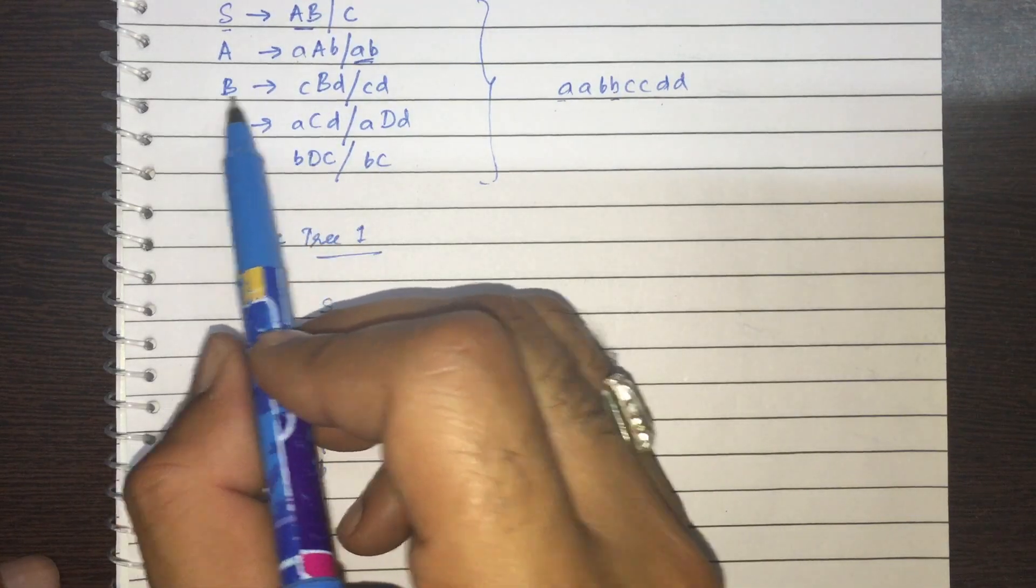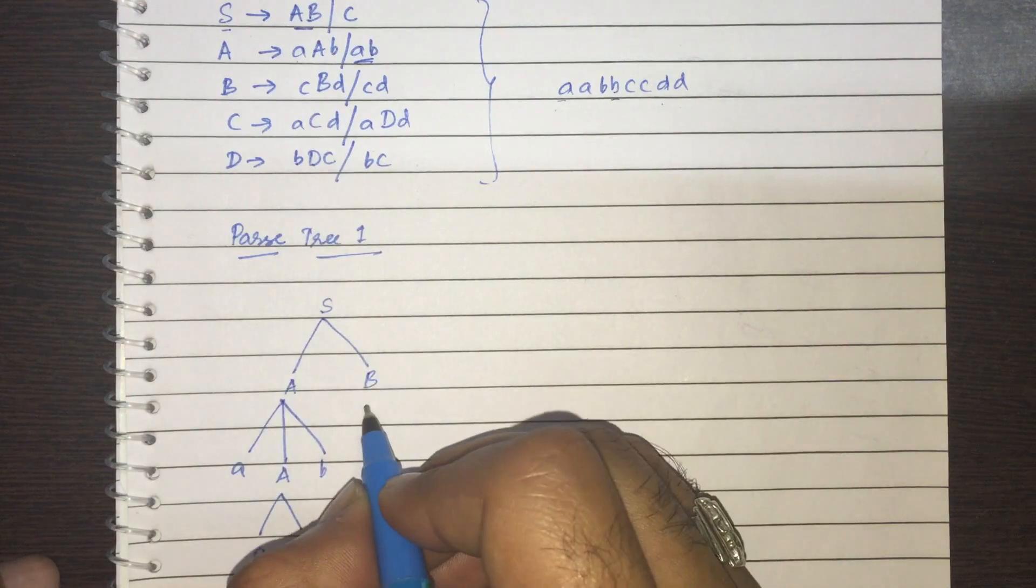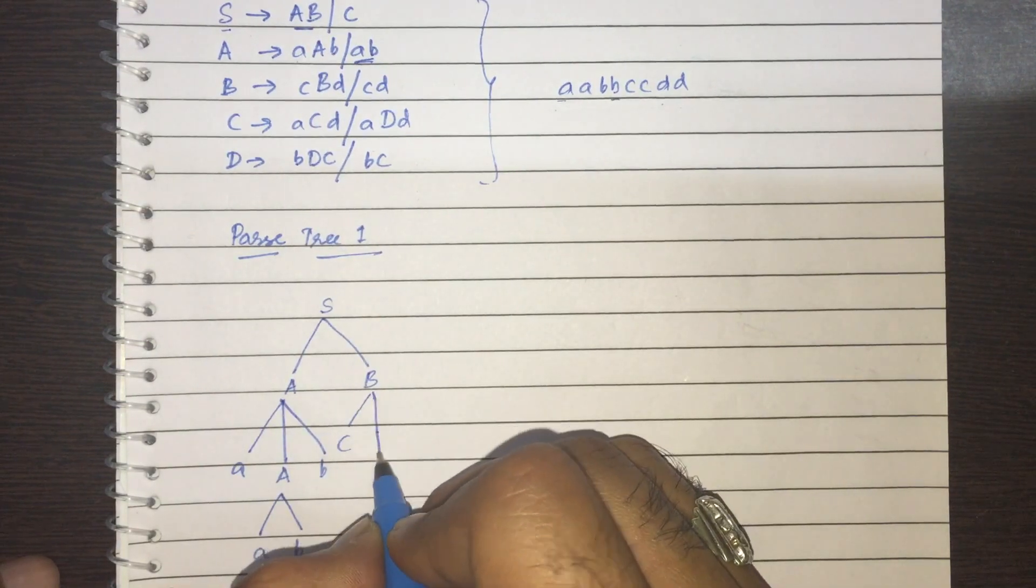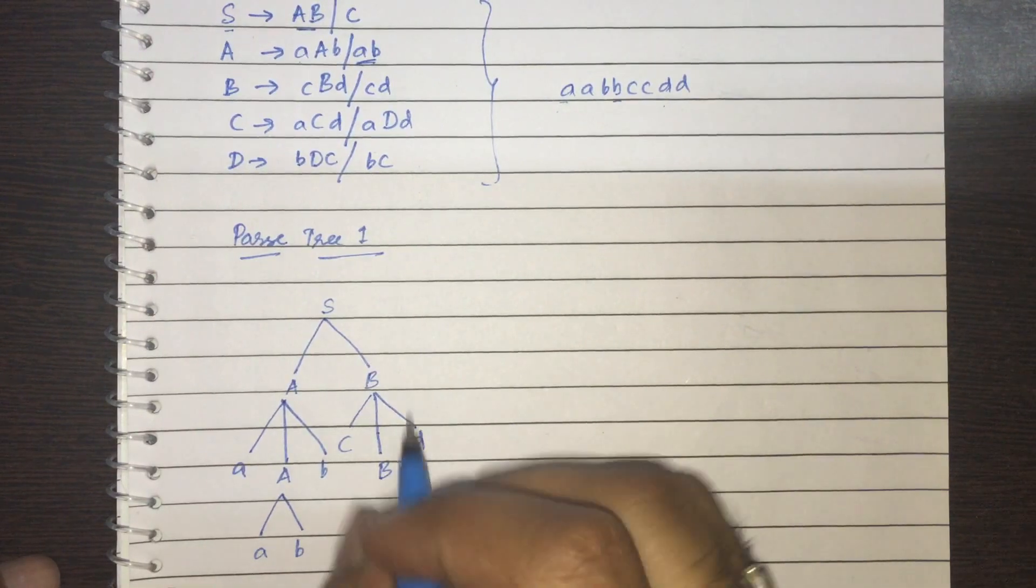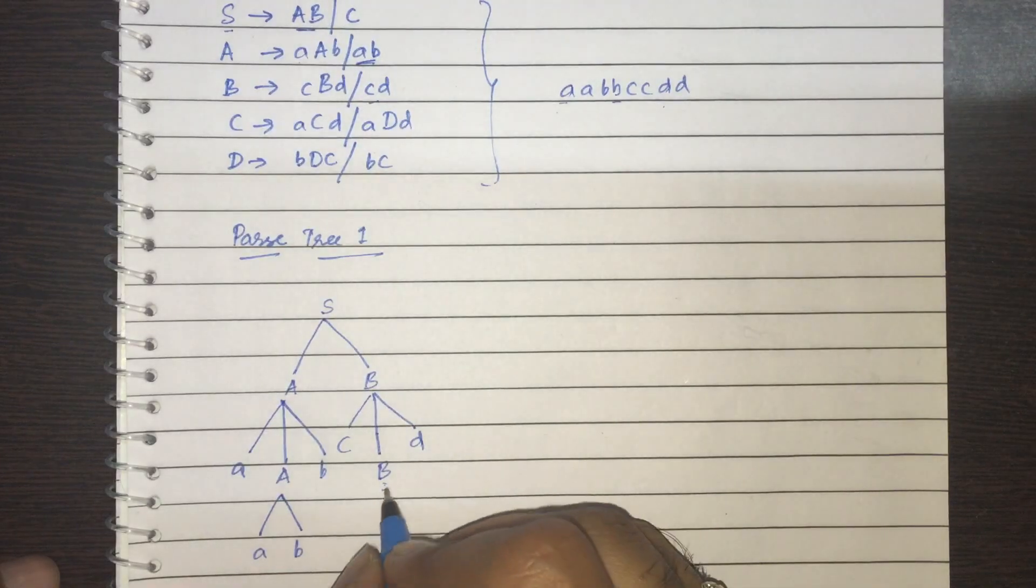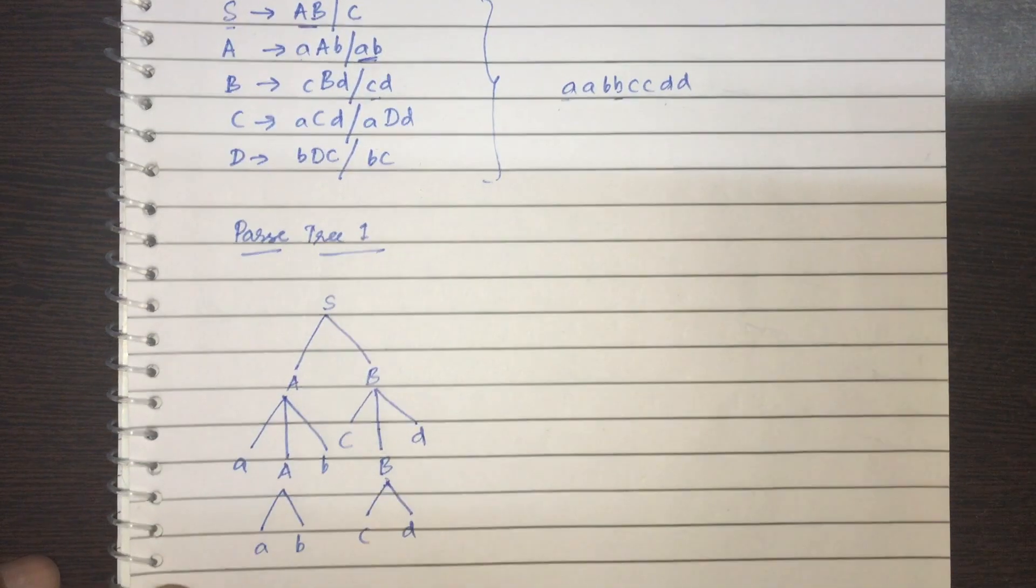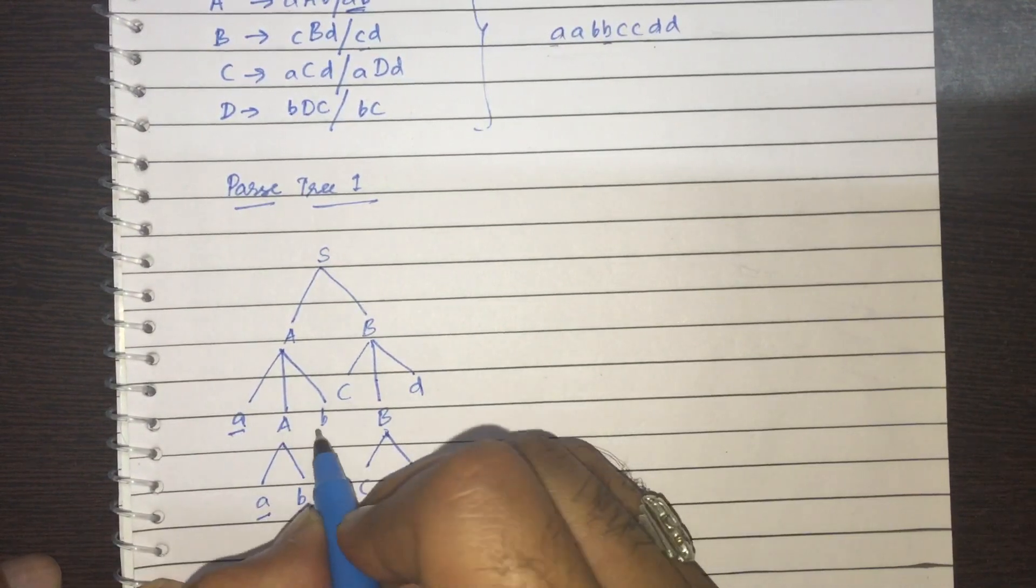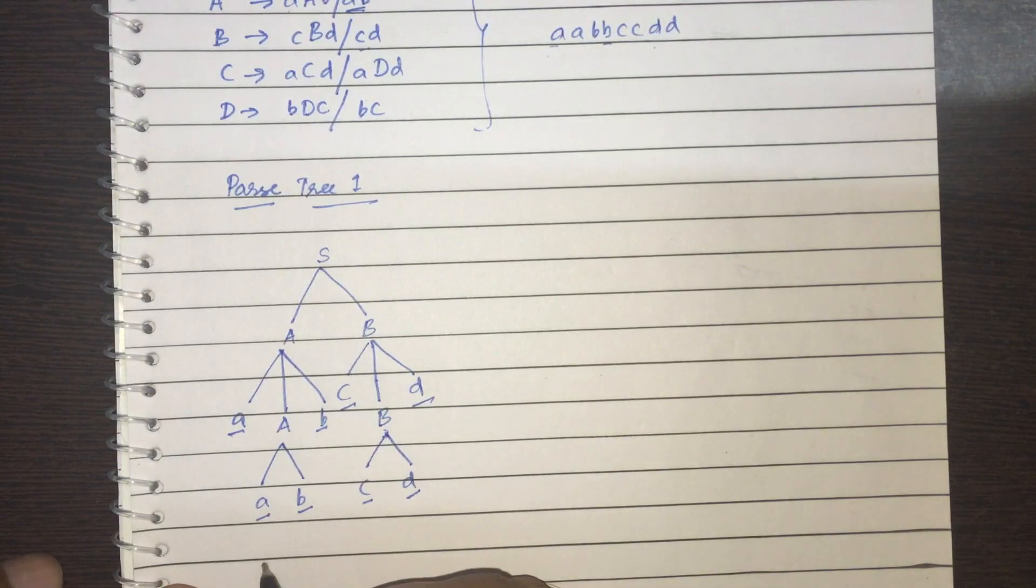Now coming to the B. So I take this B and I do the same thing. I take this C, B, D. Again, for this B, I consider this one now. So I get C, D. So the production which I've got here is A, A, B, B, C, C, D, D. I've got this.